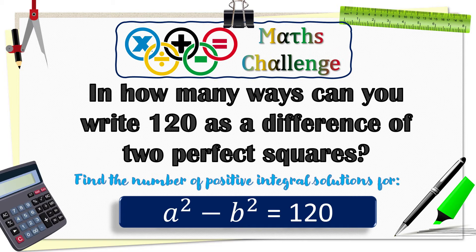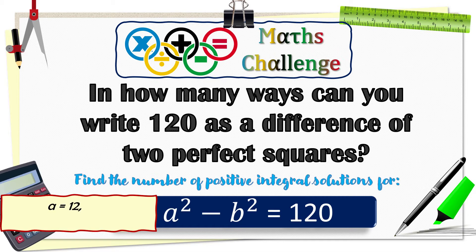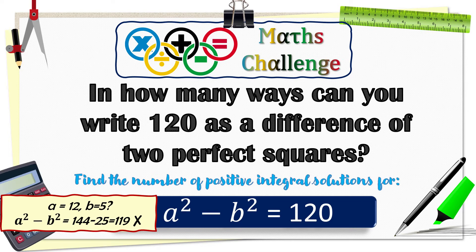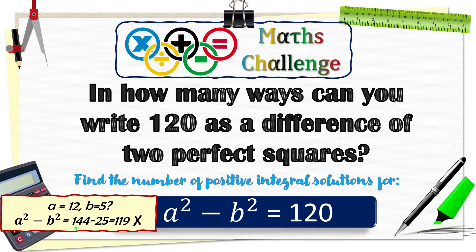Just to give you some more idea about this challenge, if I am making a wild guess and I take a as 12, then a square will be 144. If I take b as 5, then b square will be 25. 144 minus 25 is well, 119.